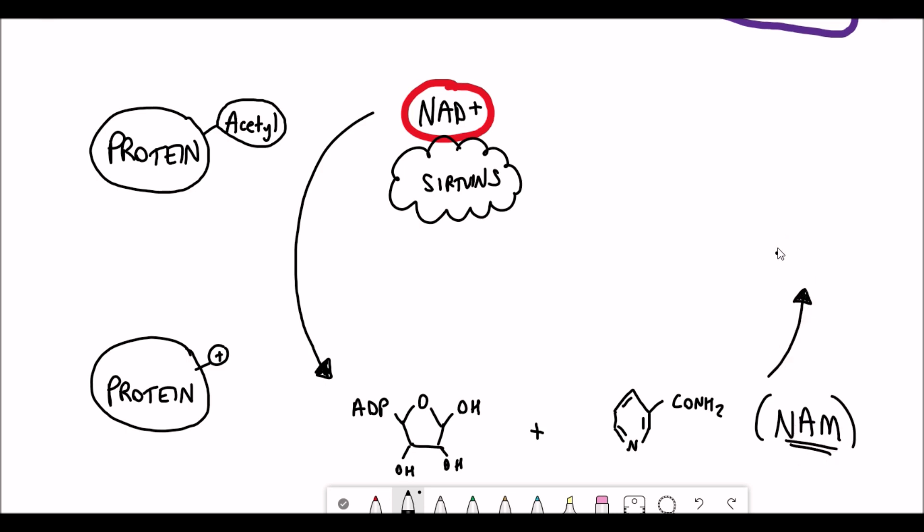So during this reaction, NAD plus is used up and the products that form, one is an ADP ribose derivative that you don't need to worry about. And you also get NAM, which is nicotinamide. We've already looked at how NAM can be converted back to NMN and then back to NAD plus. But the point is for SIRTUINs to continue their activity, they need NAD plus. They can't work with NAM or NMN.